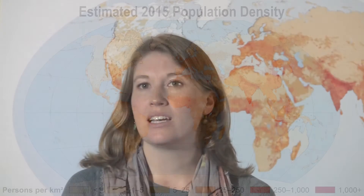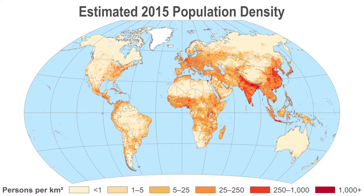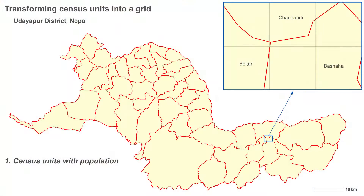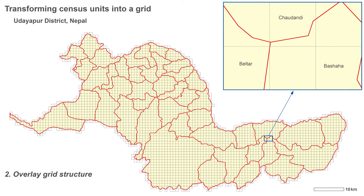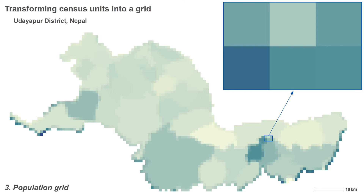The Gridded Population of the World, or GPW, is a gridded data product that depicts the distribution of human population across the globe. The basic inputs to GPW are population data and administrative boundaries from the world's censuses. The population within a given census unit is distributed evenly over each grid cell within that unit to produce a global grid of population. This gridded format lets researchers easily integrate the population data with data from the social, economic, and other sciences.